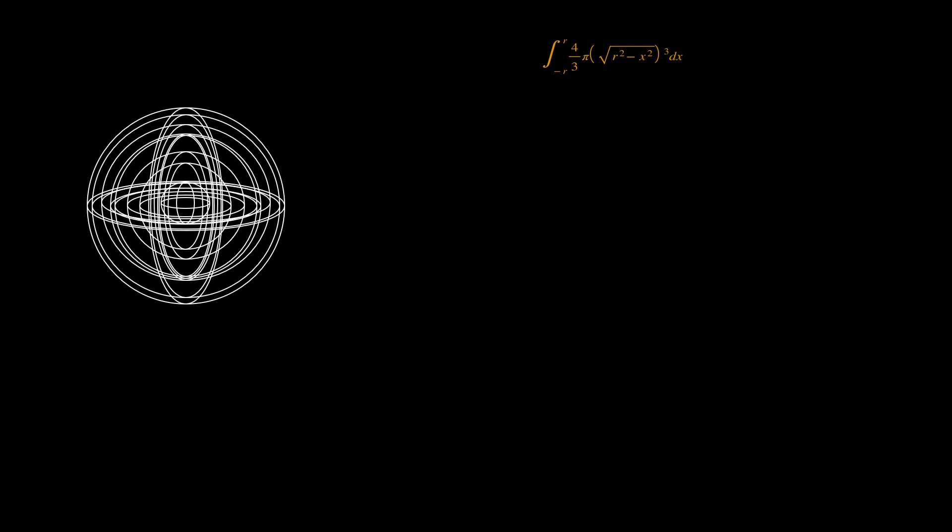We're going to do the same with the hypersphere as we did with the three-dimensional sphere and the circle. The formula for the volume of a four-dimensional hypersphere is what we get by integrating from negative r to r the volumes of three-dimensional spheres times the little increment delta x in the fourth dimension. We can replace this sum by the integral, take the r to the fourth out of the integral, and what's left represents the hyper-volume of the unit hypersphere. The hyper-volume of an n-dimensional sphere varies as r to the n, multiplied by a constant representing the hyper-volume of the n-dimensional unit sphere.